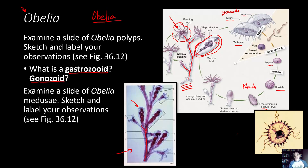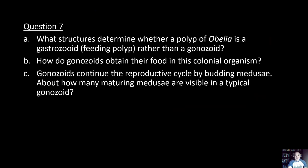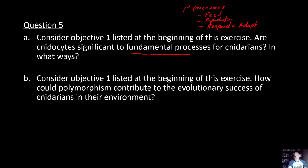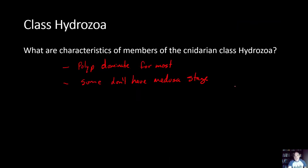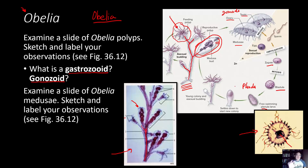The Obelia medusa are small and visible under a microscope from the oral side, with tentacles in a typical medusa arrangement. There will be questions about Obelia to answer. Always sketch and label structures and life cycles you need to know. The main generalized life cycle should be learned thoroughly so you can interpret any cnidarian life cycle.